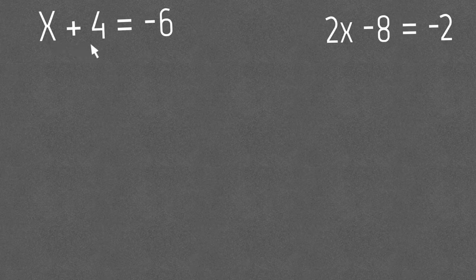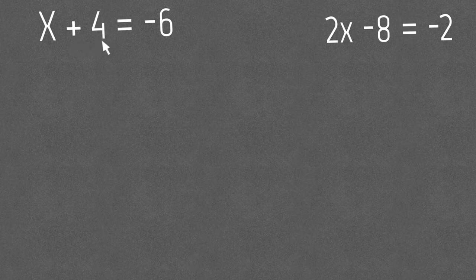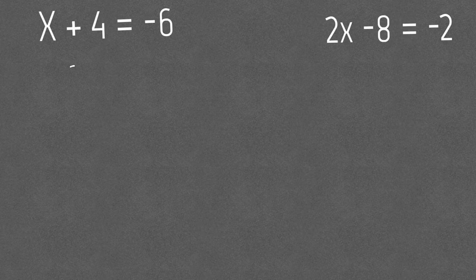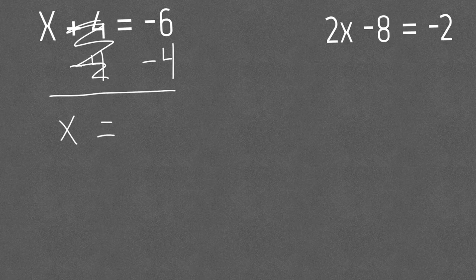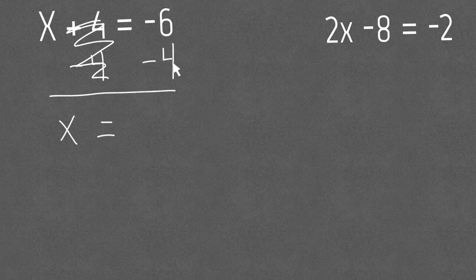So over here we have x plus 4 equals negative 6. So we already know that we're gonna have to subtract positive 4 from over here and do the same over there. So let's go ahead and write that down and solve it. So on my left side I'm gonna be left with x because these will cancel out and then I have to solve the problem negative 6 minus 4.